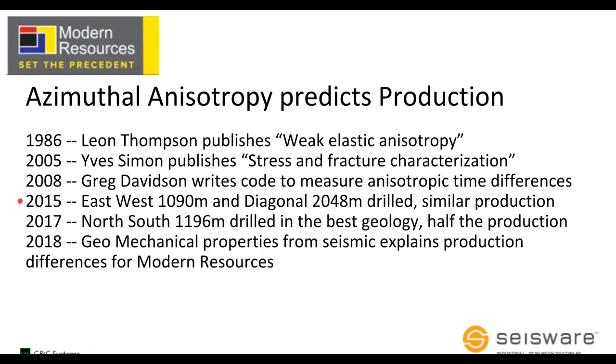In 2015, Modern drilled an east-west line and then another operator drilled a diagonal that was twice as long, but it had similar production. So then the question came up, why did the short well produce the same amount as a diagonal well? And the diagonal well was drilled diagonally where it was parallel to the mountain front and should be optimum for the stress factors. But this didn't make any sense. Then in 2017, we drilled a north-south well that was into the best geology, best net to gross, and yet it was half the production.